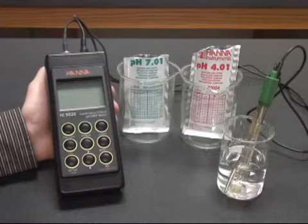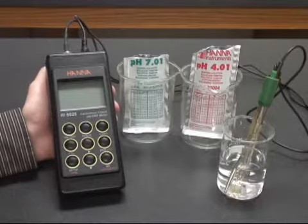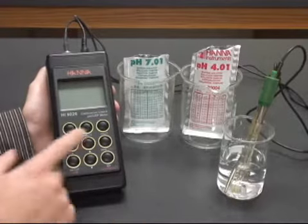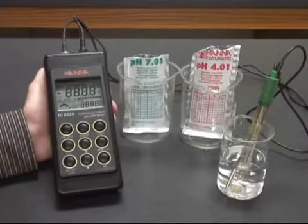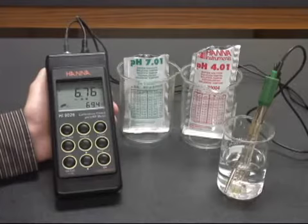This is a short video on how to calibrate the HANA Instruments Portable pH Meters, the HI90 and 91 series. First we're going to turn on our meter and let the LCD completely load into measurement mode. You see it doesn't take very long.